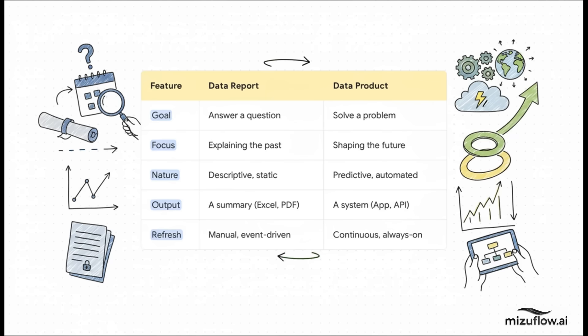A report answers a question. A product solves a problem. A report explains what happened in the past. A product is all about actively shaping the future. You go from delivering a static PDF to building an automated system. It's the huge difference between a one-time answer and a continuous living solution.